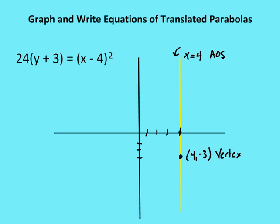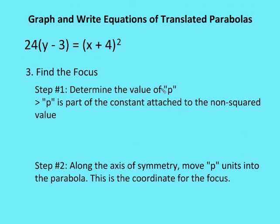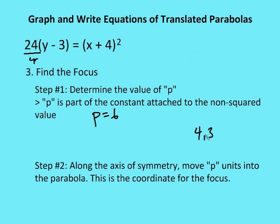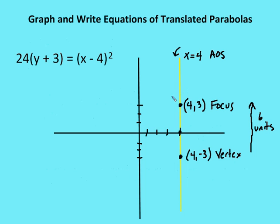Step 3 — find the focus: determine the value of p. You may need to rewrite the equation so the constant is in front of the non-squared variable — here it already is. Dividing 24 by 4 gives p equals 6. Move 6 units along the axis of symmetry into the parabola from the vertex at (4, negative 3). The focus is at (4, 3).